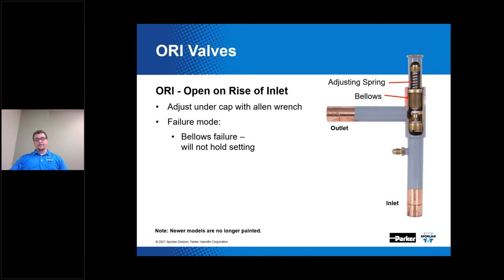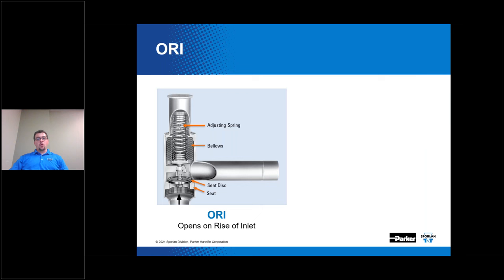Here's another cutaway of the ORI with different internal components labeled. You can see the adjustment spring — it is adjustable, so you can take the cap off the top, use an Allen wrench, and change the setting accordingly. You can also see the seat disk, seat, and bellows.